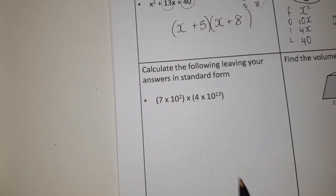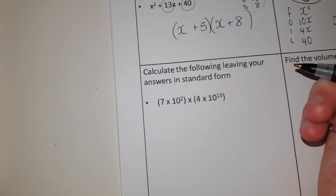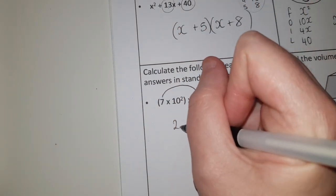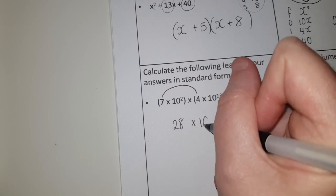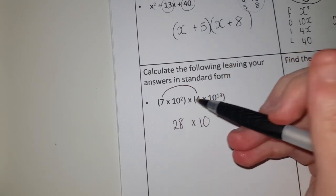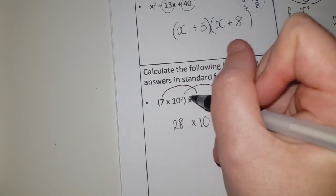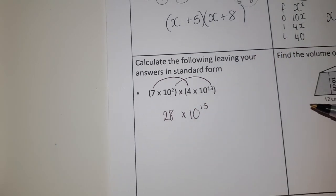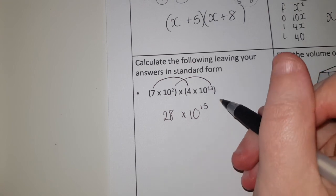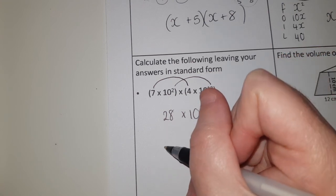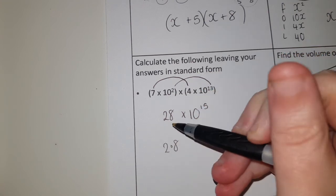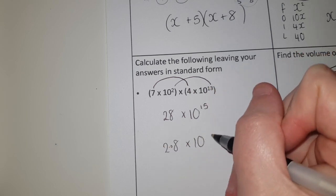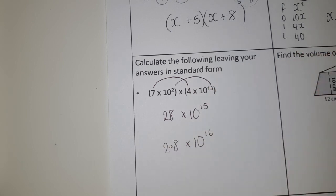Right, standard form, we're going to multiply these together. Remember for multiplication questions, the numbers get multiplied as normal, so 7 times 4 is 28. It's always times 10 to the power of something, and when you're multiplying it, you add the powers. So 2 add 13 is 15. And then remember, make sure it's in correct standard form. This number needs to be less than 10, so if I make that 2.8, I've made that one decimal place smaller. So to balance it out, we make this one power of 10 bigger, I get a power of 16.